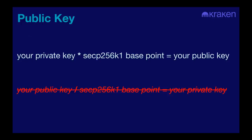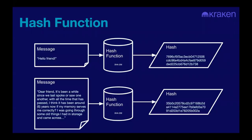In Bitcoin, you share a public key after it's been hashed. A hash function takes a message of any length — whether short or long — and produces a fixed-length output. You can see here that even if the input is longer, the output is going to be the same length. This is very useful because it allows you to shorten your public key into a short address that you share with others.